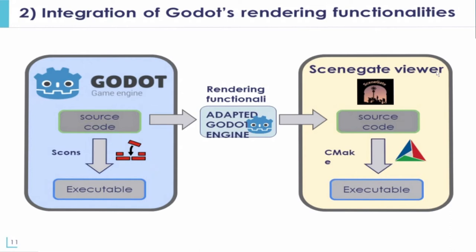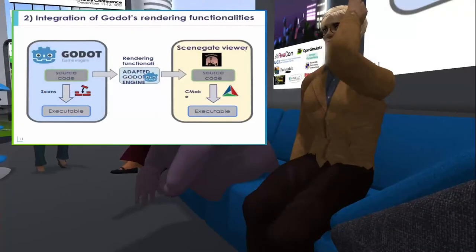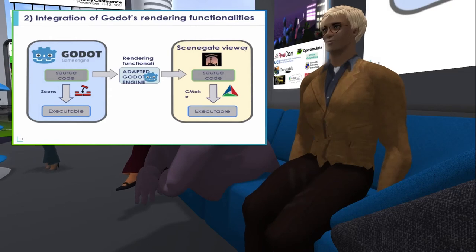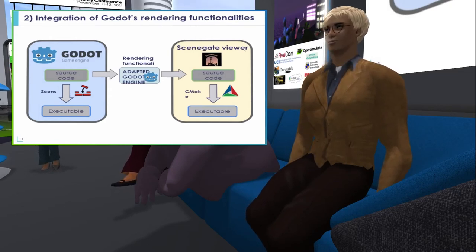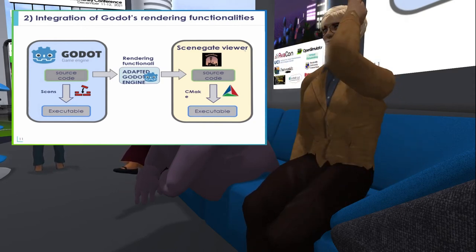For our second goal of integrating Godot's rendering functionality, our goal is to ultimately create one single application with a single executable, integrating all of Godot's useful functionalities inside the SceneGate source code. Since Godot was not made to be used as a library, we want to create an adapted Godot engine. We also need to understand all of Godot's architecture and handle the fact that Godot uses SCons as a compiling application while we need to use CMake inside the viewer — so there's a conversion needed there. We've made some progress implementing classes from Godot inside SceneGate, but there's still a lot more to be done.